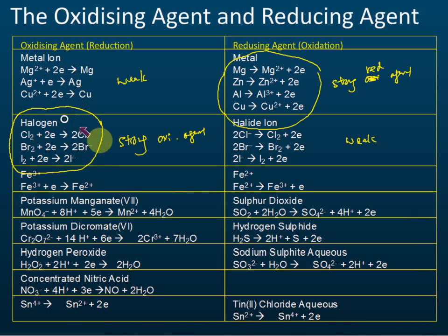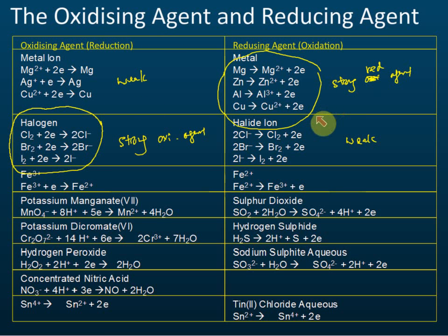For the half equations for metals, their ions, and halogens, you must know how to write them. Memorize the oxidizing agents and reducing agents so that when you see questions related to transfers of electrons through a distance, you can straight away tell which one is the oxidizing agent and which one is the reducing agent.